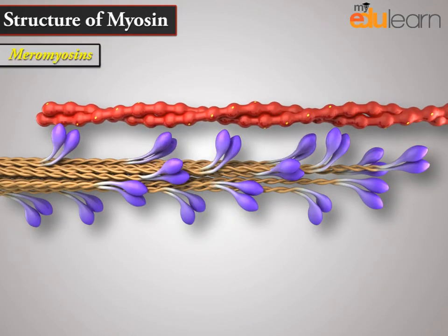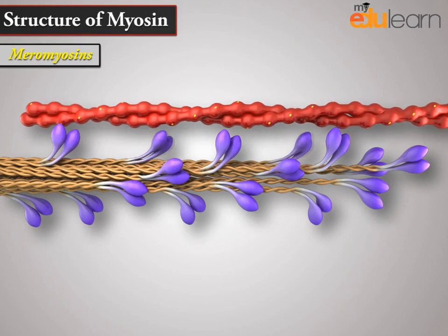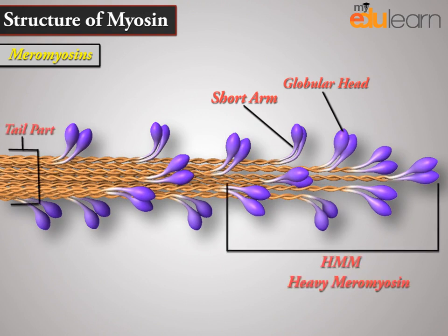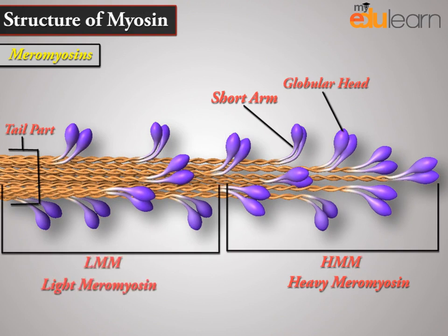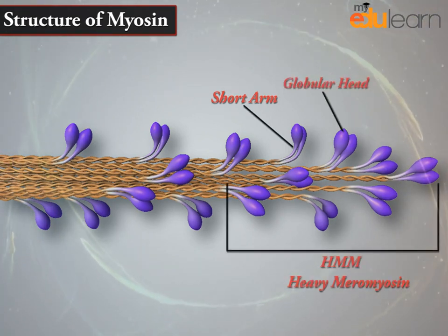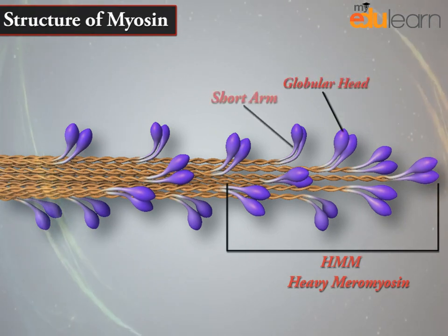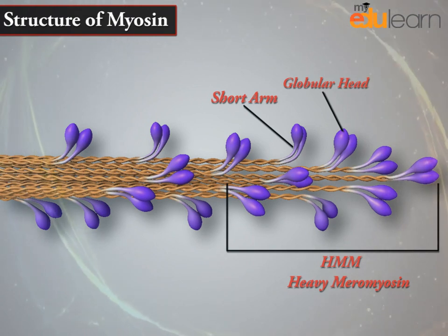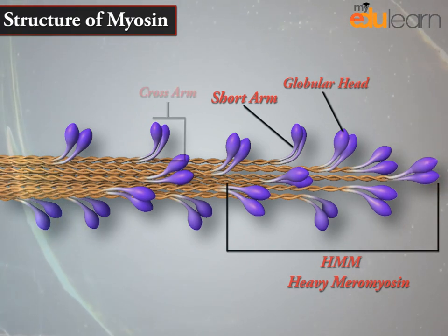Each meromyosin has two important parts: a globular head with a short arm, and a tail. The former is called heavy meromyosin, HMM, and the latter the light meromyosin, LMM. The HMM component — the head and short arm — projects outwards at regular distances and angles from each other from the surface of polymerized myosin filaments, and is known as the cross arm.